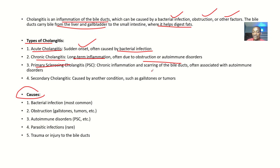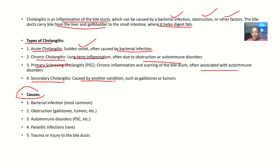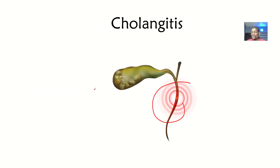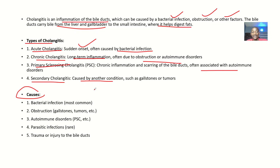Then we have primary sclerosing cholangitis — this also involves chronic inflammation with scarring of the bile ducts, and it's often associated with autoimmune disorders. Then we have secondary cholangitis, which is caused by another condition such as gallstones or tumors.